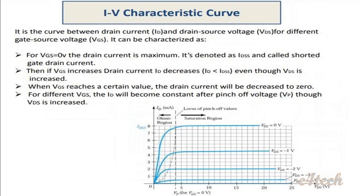Next, VI characteristics of a J-FET — voltage and current characteristics. J-FET has two types of characteristics: drain characteristics and transfer characteristics. Drain characteristics show the relation between drain current ID and drain-source voltage VDS for different gate-source voltages.